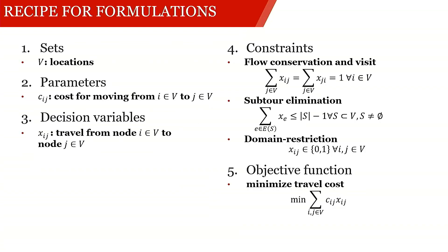Let's look into the recipe for formulations for the TSP. In this formulation, we have sets, which in this case is only the locations. We have parameters, which is just the transport costs. We have decision variables, which is the decision whether or not we move along one arc. Then we have constraints for flow conservation, subtour elimination, and domain restriction. And we're minimizing the total travel costs.